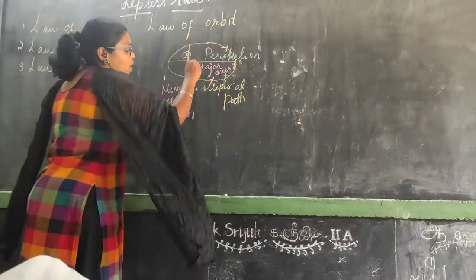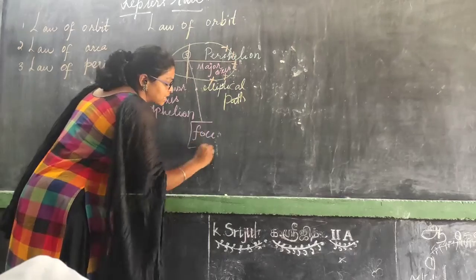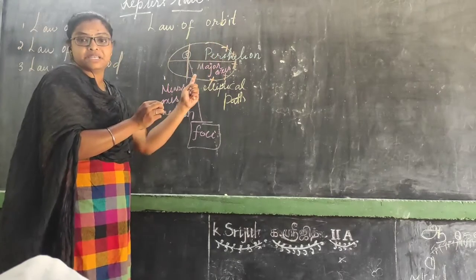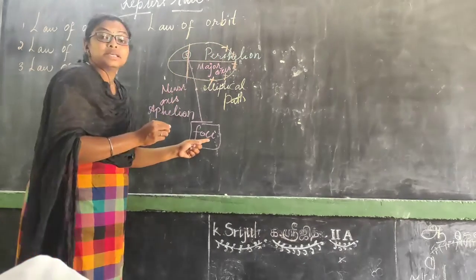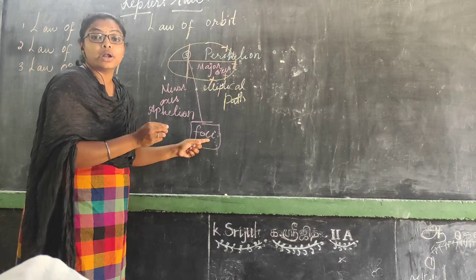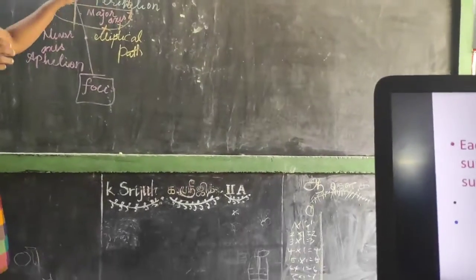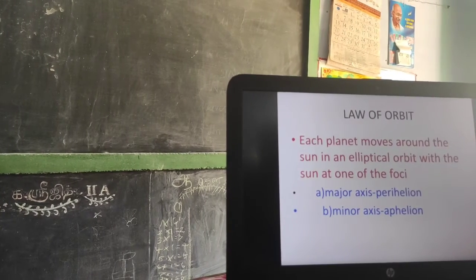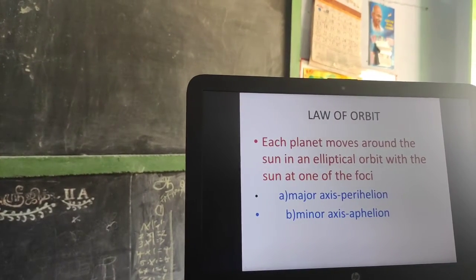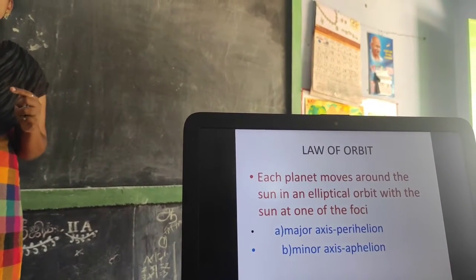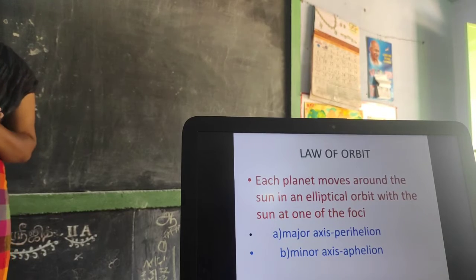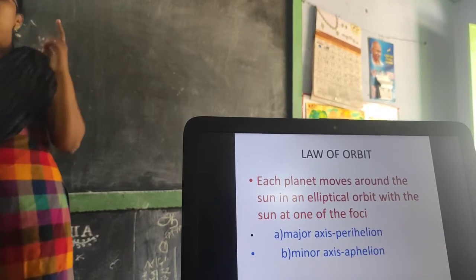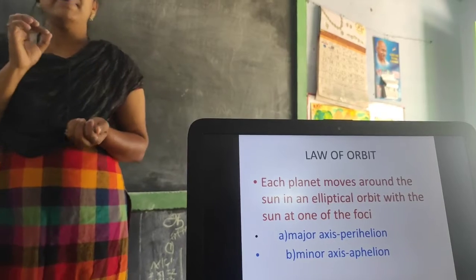So what is the center here? The sun. The sun is at one of the foci — it's not exactly in the middle, instead it is at one of the foci in the elliptical path. The definition here is: each planet revolves around the sun with the sun at one of its foci, and all planets revolve around the sun in an elliptical path. The two important keywords are: major axis which is perihelion, and minor axis which is called aphelion.